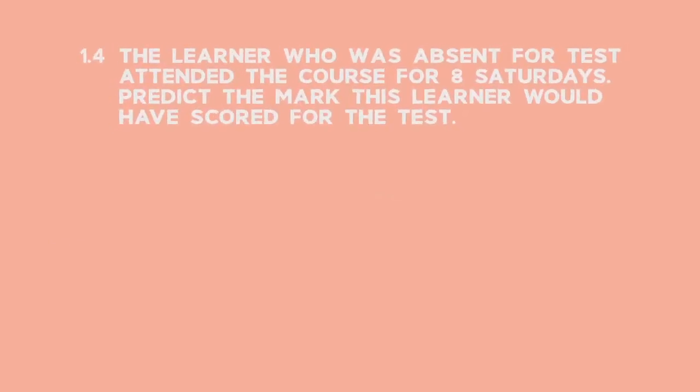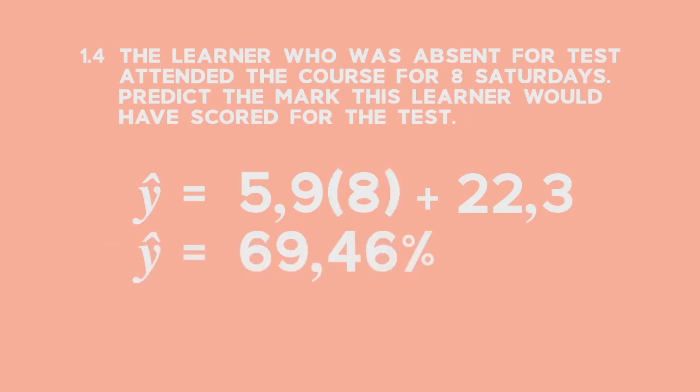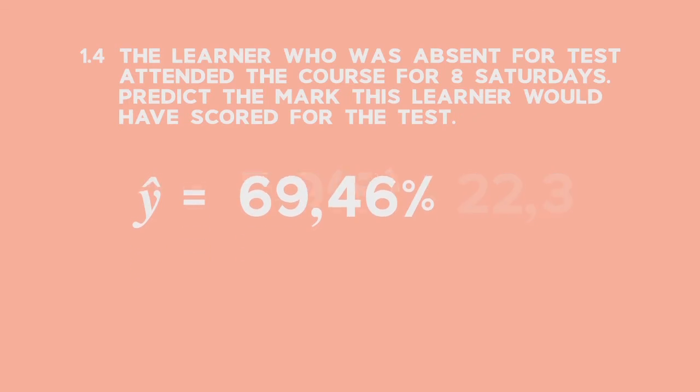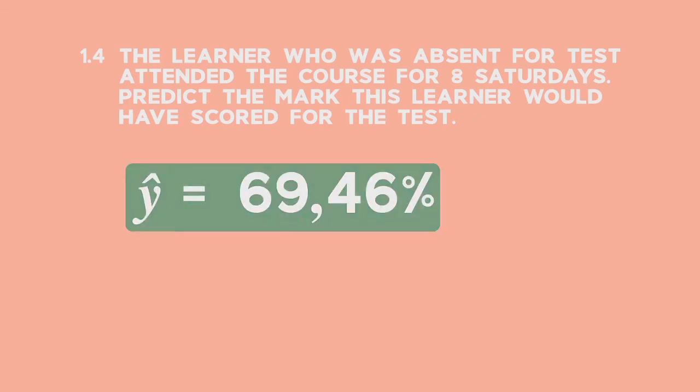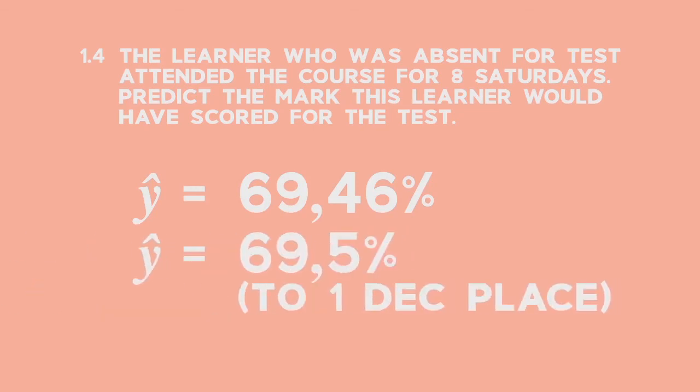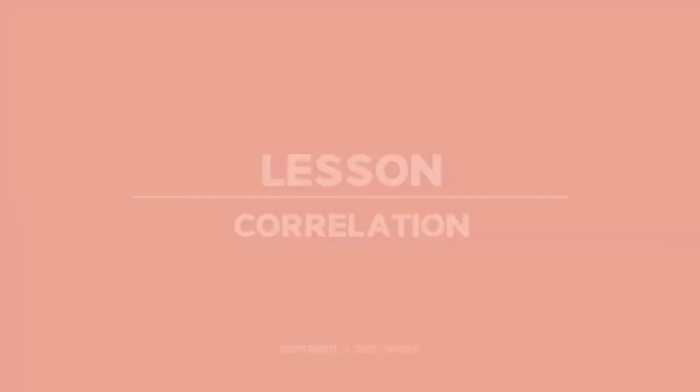For 1.4, we use the least squares regression line to make a prediction about the test scores for the absent learner. Since this learner attended 8 Saturday lessons, substitute 8 for X in the regression equation and calculate the predicted percentage obtained. We can predict a mark of 69.46 for the learner who only attended 8 of the 12 lessons.